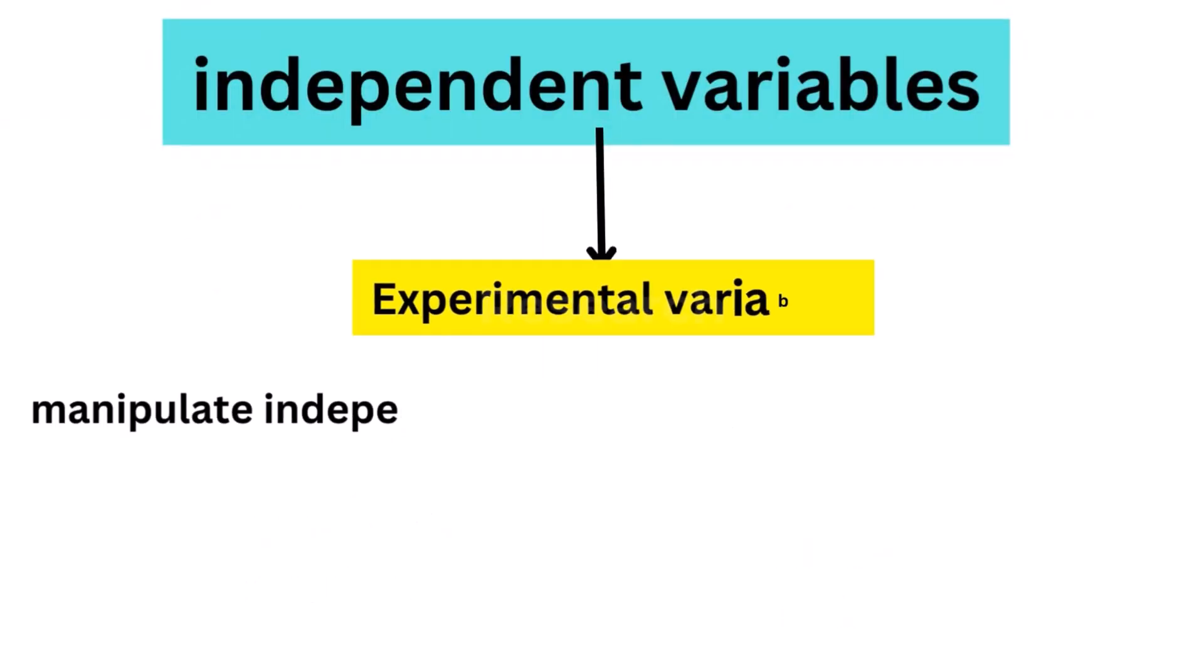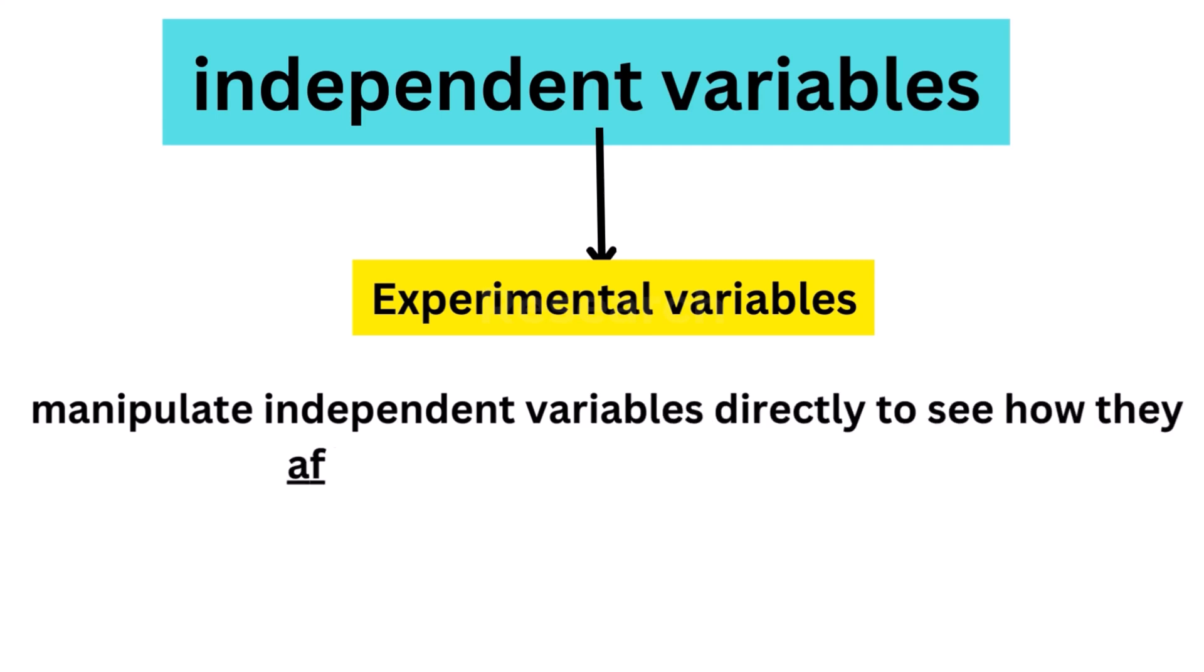Experimental variables: In experiments, you manipulate independent variables directly to see how they affect your dependent variable.